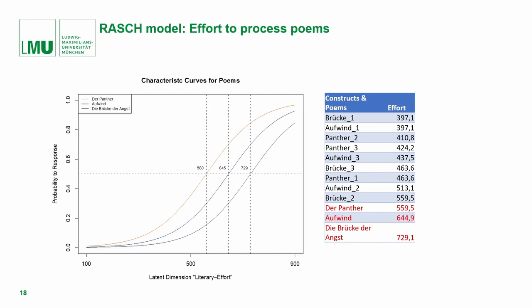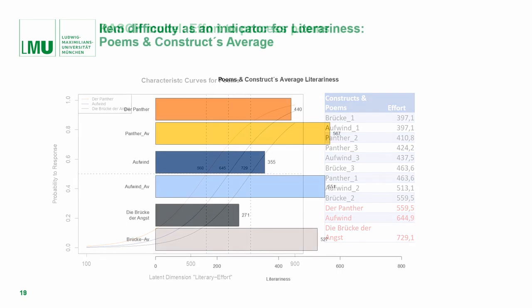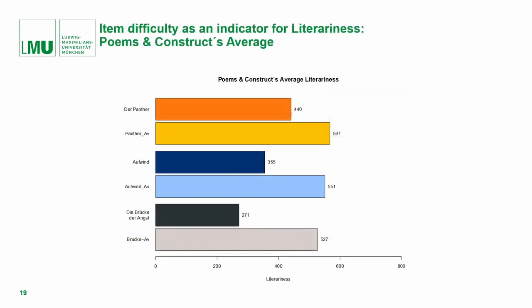The characteristic curves for the text are shown on this slide. If you look at the values for the effort, you will see that they are higher for the text than for the single constructs. In the last graph, we compare the literariness of the text with the average literariness of the constructs of each text — the literariness measure was calculated from the effort value. We can see that the constructs themselves contain more potential of literariness than the poems. We should discuss this, so I hand over to Katharina again.